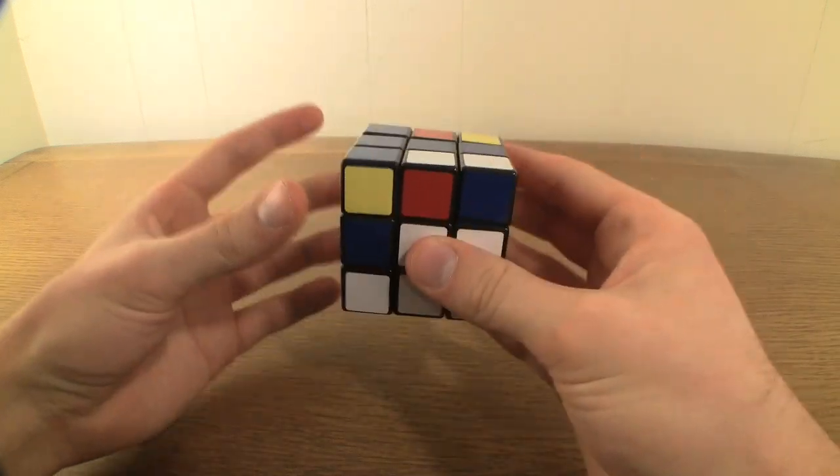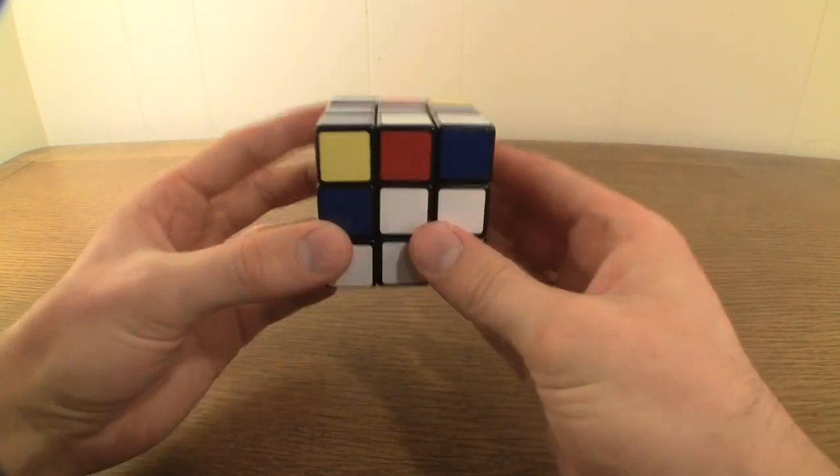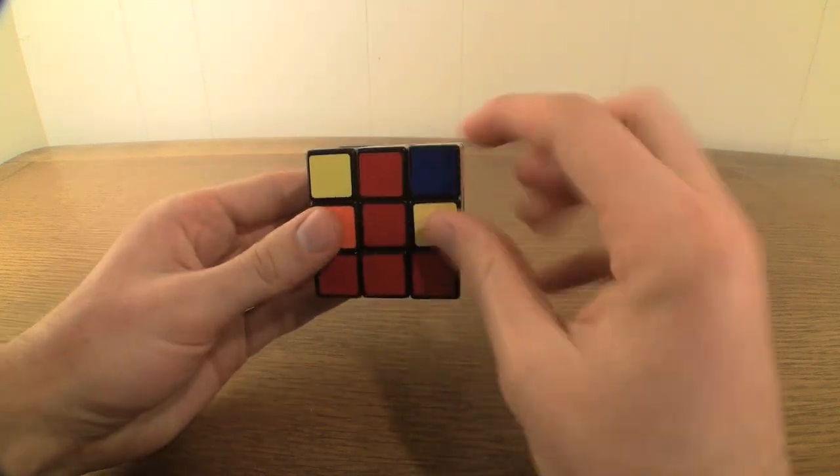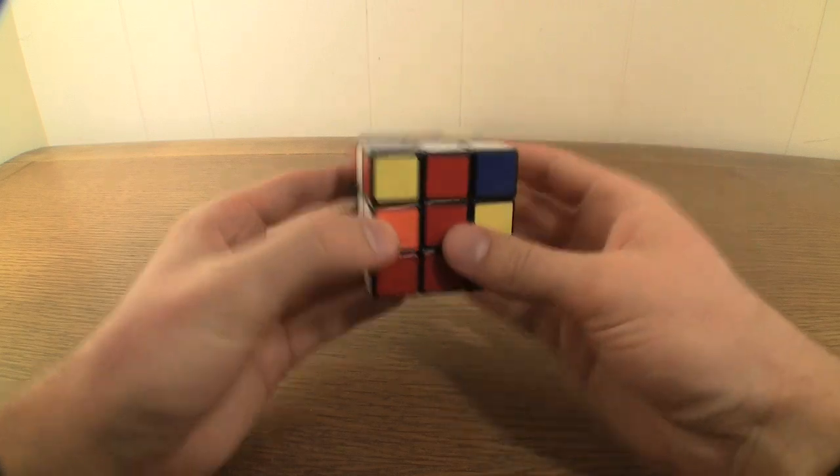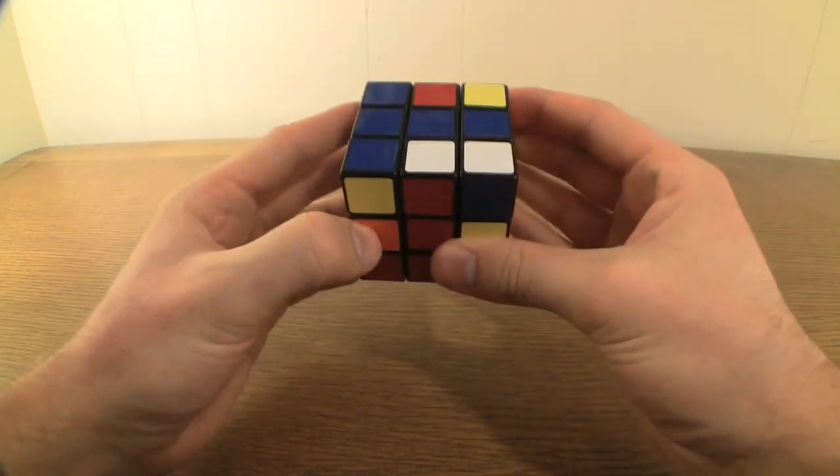Twist the up face so that the color facing you lines up with the center of the same color. Now, re-grip the cube so that the edge piece in question is once again the top middle of the front face.